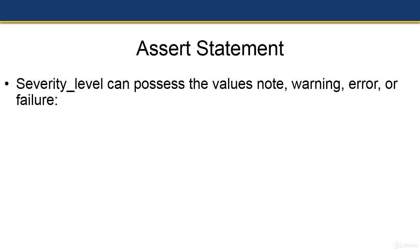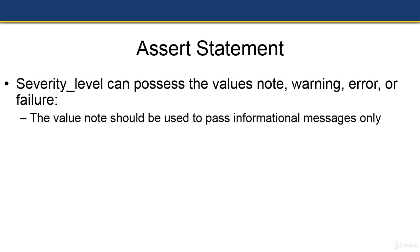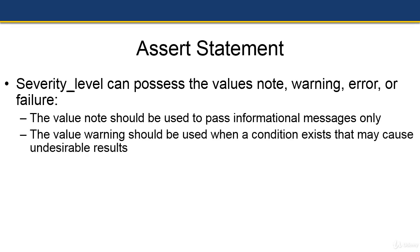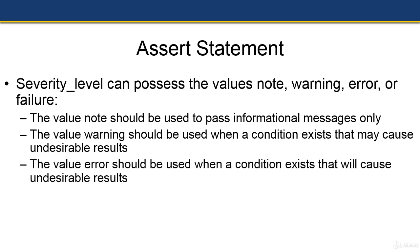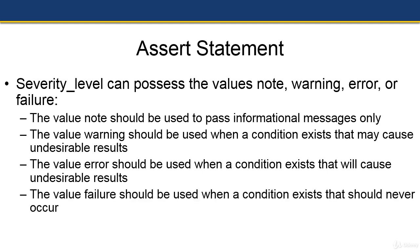When covering enumerated data types, we touched on the data type severity level, which can have these possible values: note, warning, error, or failure. The value note should be used to pass informational messages only. Warning should be used when a condition exists that may cause undesirable effects or results. Error should be used when a condition exists that may cause undesirable results. And failure should be used when a condition exists that should never occur.